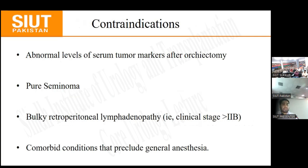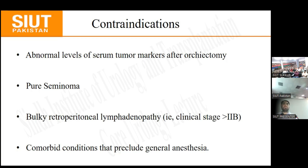The contraindications of RPLND include an abnormal level of serum tumour markers. Elevated serum tumour markers after RPLND indicate that there are other metastatic sites in the retroperitoneum. Dissecting the retroperitoneal mass still provides no benefit if there are other sites such as pulmonary or liver metastasis causing the marker elevation, meaning the prognosis will be poor.